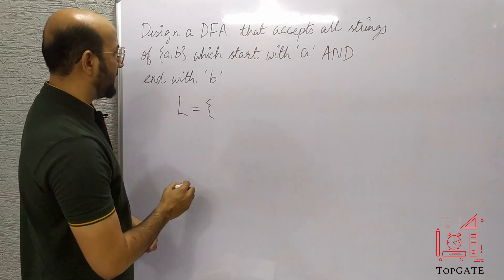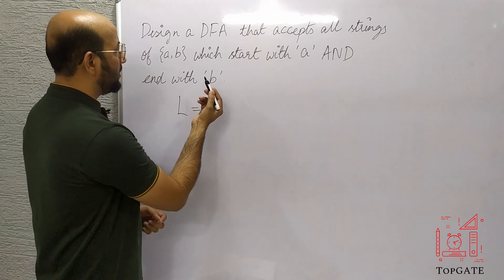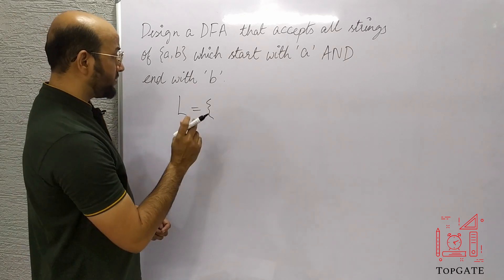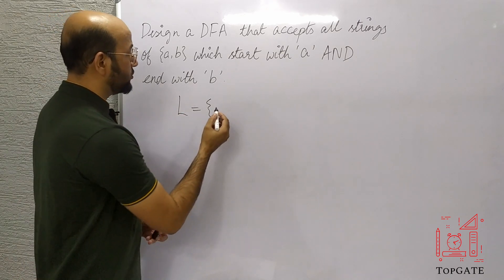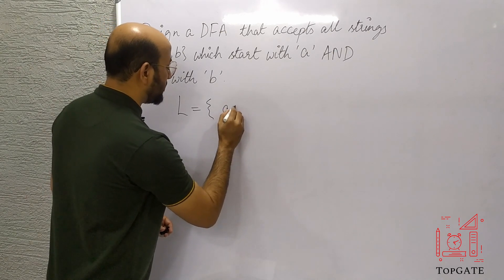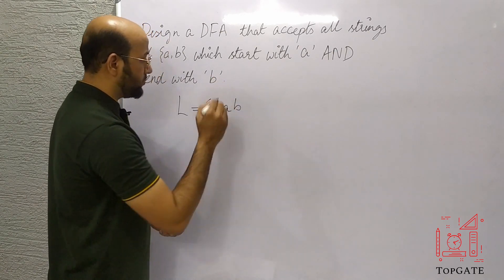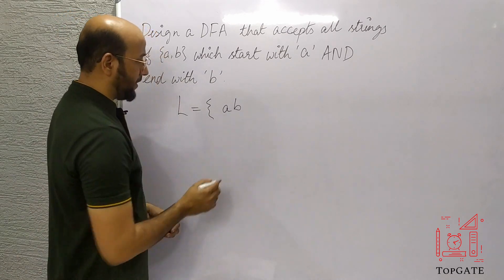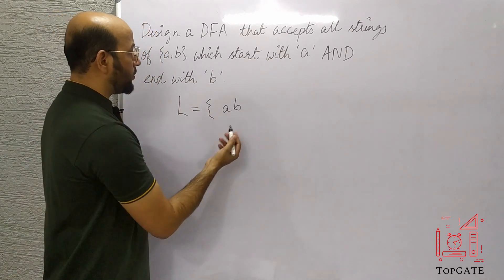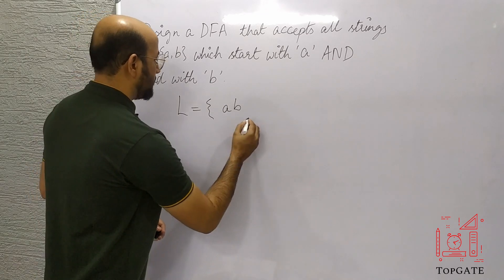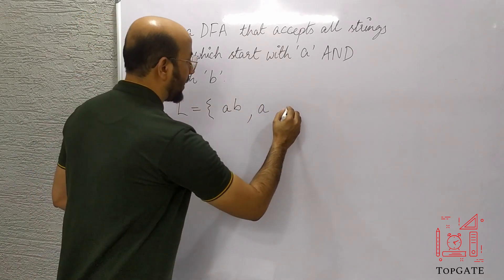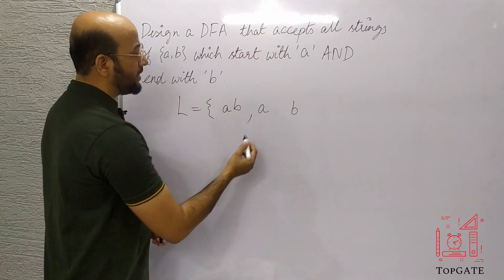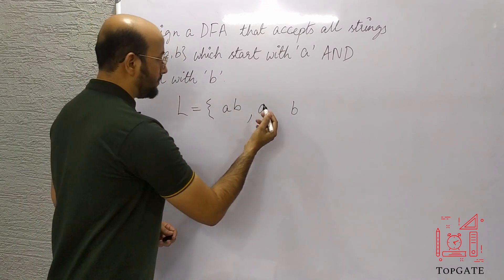So in the language, it is saying that the string should start with A and it should end with B. So what is the shortest possible string in this case? The shortest possible string starts with A and ends with B — that is AB. It should be accepted. Now apart from this, it says that it should only start with A and end with B, but in between this A and B I can have any combination of A and B.